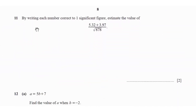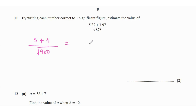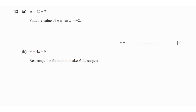Question 11: by writing each number correct to one significant figure, estimate the value. 5.32 becomes 5, 3.97 becomes 4, and 878 becomes 900. So 9 over the square root of 900, which is 30, gives 9 over 30, simplifying to 3 over 10.